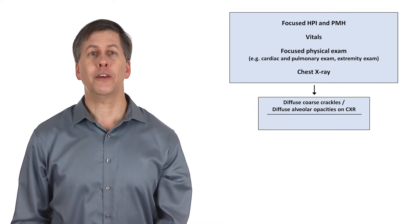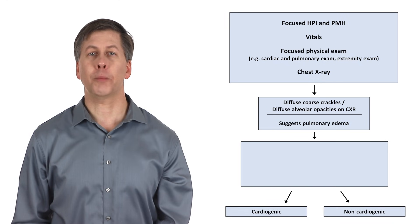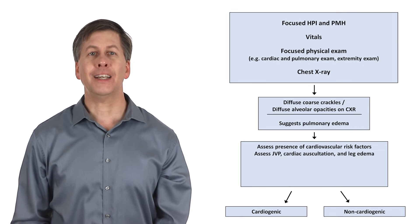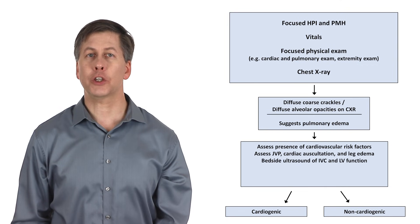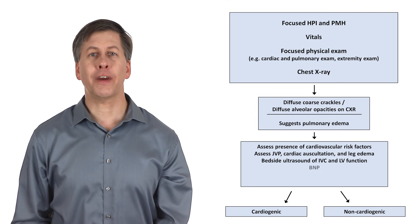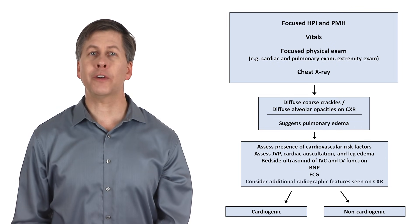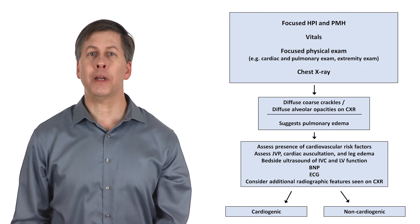Diffuse coarse crackles and diffuse alveolar opacities on chest x-ray suggest pulmonary edema. Additional features specifically suggestive of a cardiogenic etiology of pulmonary edema include known cardiovascular risk factors, an elevated JVP, an S3, symmetric leg swelling, a dilated IVC, and low LV systolic function on bedside ultrasound, a significantly elevated BNP, and either a significant arrhythmia and or LVH seen on ECG. There are also a few radiographic clues on the chest x-ray, such as concurrent pleural effusions, cardiomegaly, and curly B lines, all of which are more commonly seen with cardiogenic edema.